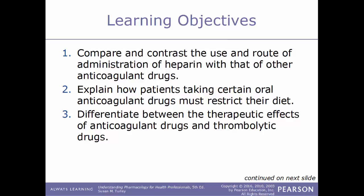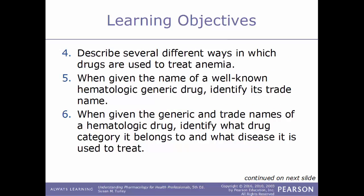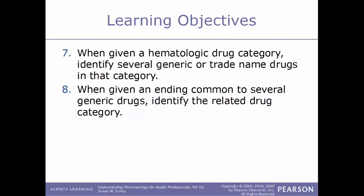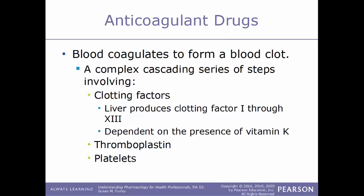Differentiate between therapeutic effects of anticoagulant drugs and thrombolytic drugs. Describe several different ways in which drugs are used to treat anemia. When given the name of a well-known hematologic generic drug, identify the trade name. When given the generic and trade name of a hematologic drug, identify what drug category it belongs to and what disease it would be used to treat. When given the hematologic drug category, identify several generic and trade names in that category, and when given a common drug ending, identify the related drug category.